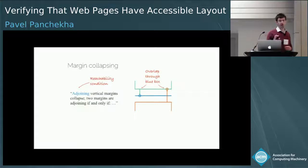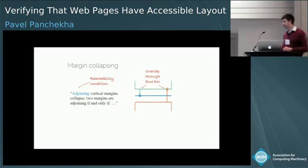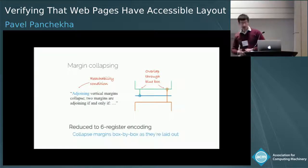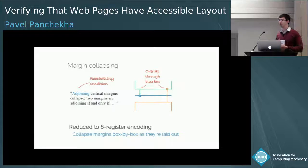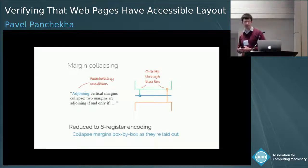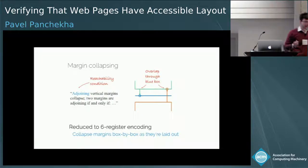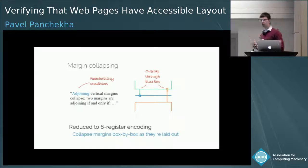To represent this reachability idea in SMT, we had to find a new algorithm for computing margin collapsing. This uses a combination of top-down and bottom-up traversals to compute the minimum and maximum over all adjoining margins without ever having to explicitly determine whether two margins adjoin. That uses six basic data types — five reals and one boolean — for every box in the page.